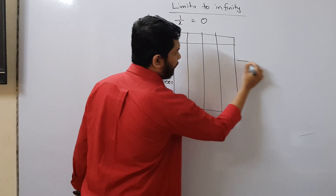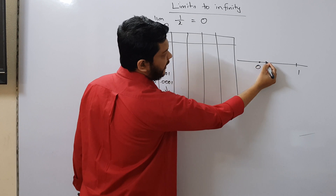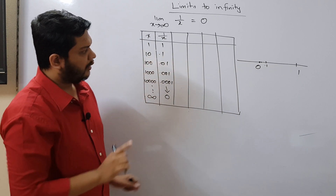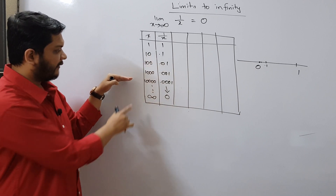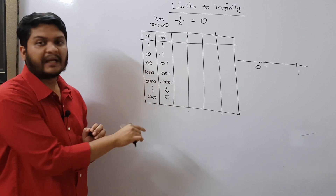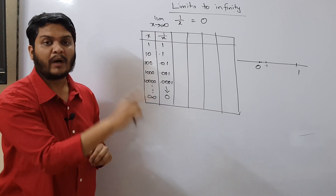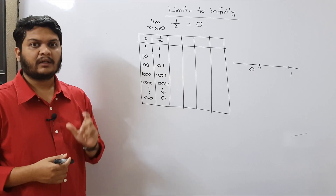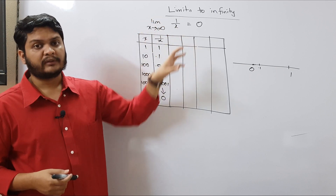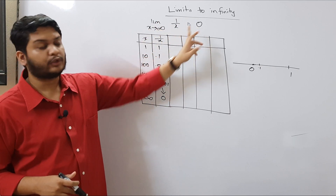For a better understanding, let me draw the number line. This is 0 and this is 1. At first you get 1, then 0.1, then 0.01 — each value is getting very, very close to 0. If you consider a number 1 followed by infinite zeros, the result will be 0 followed by infinite zeros and then 1, which is even closer to 0. So if we can somehow reach x equals infinity, then 1 divided by x equals 0.